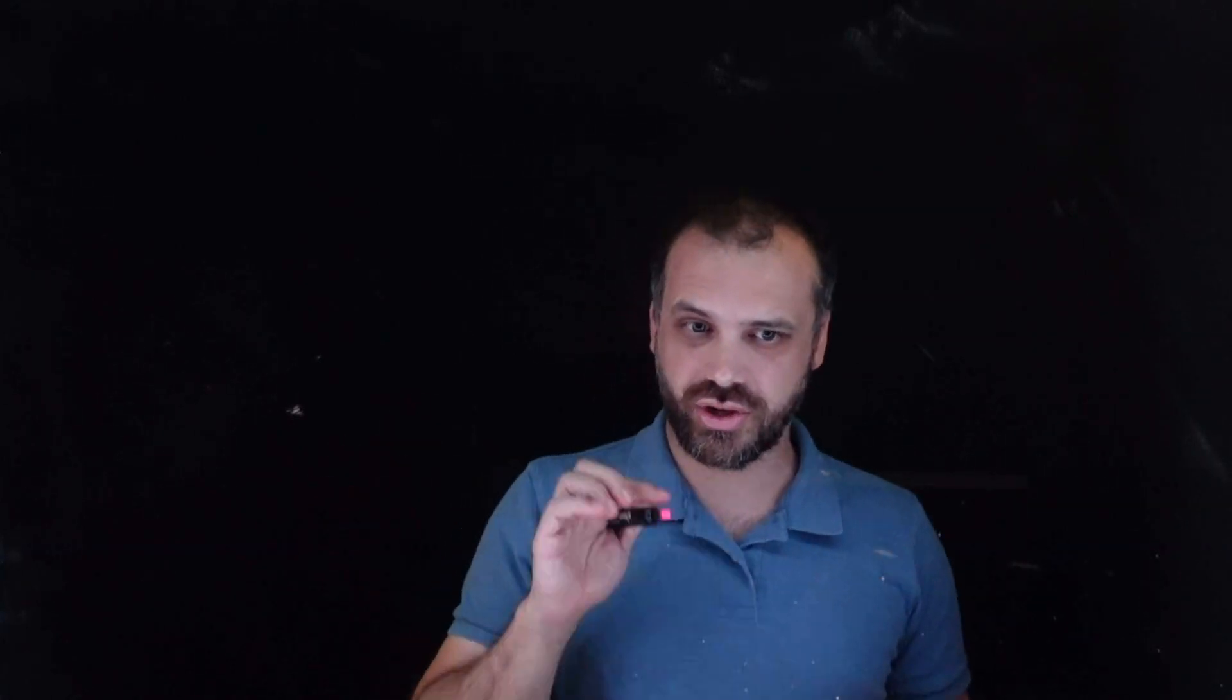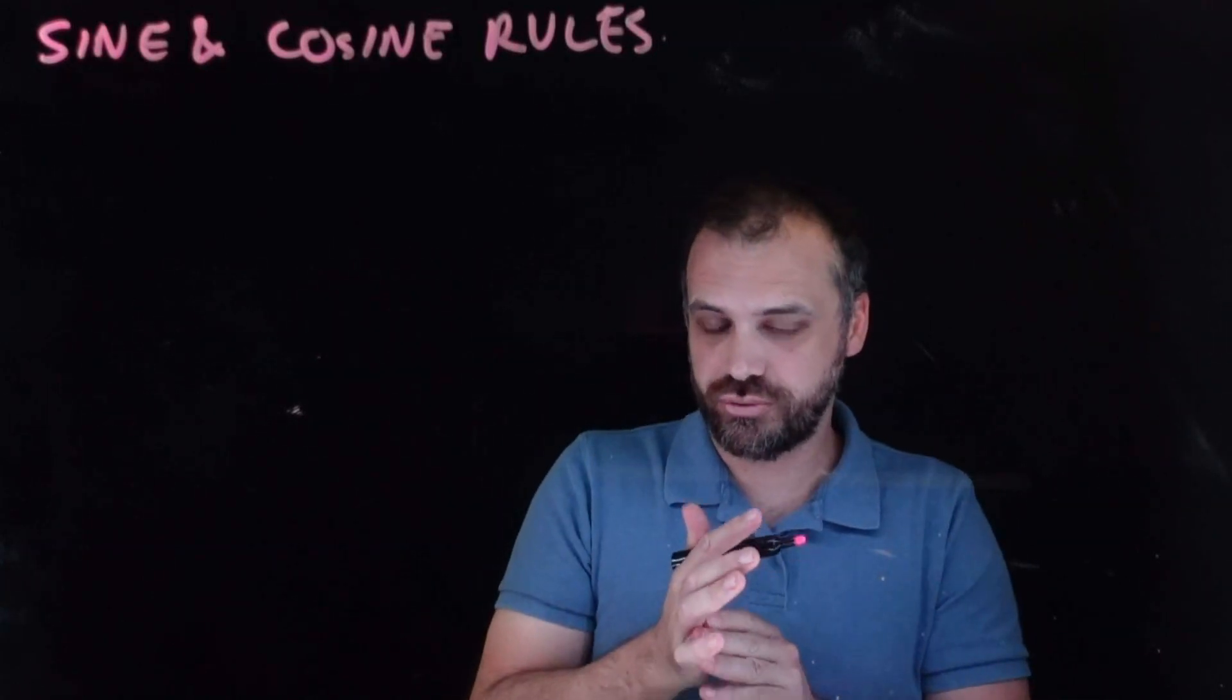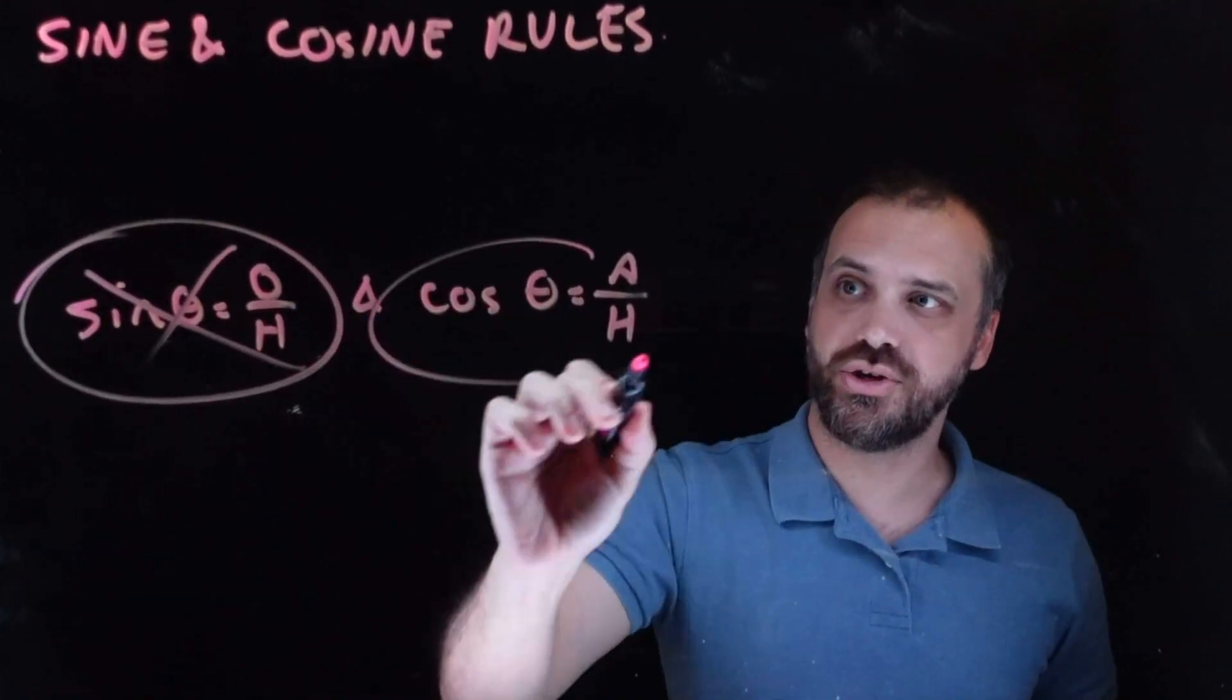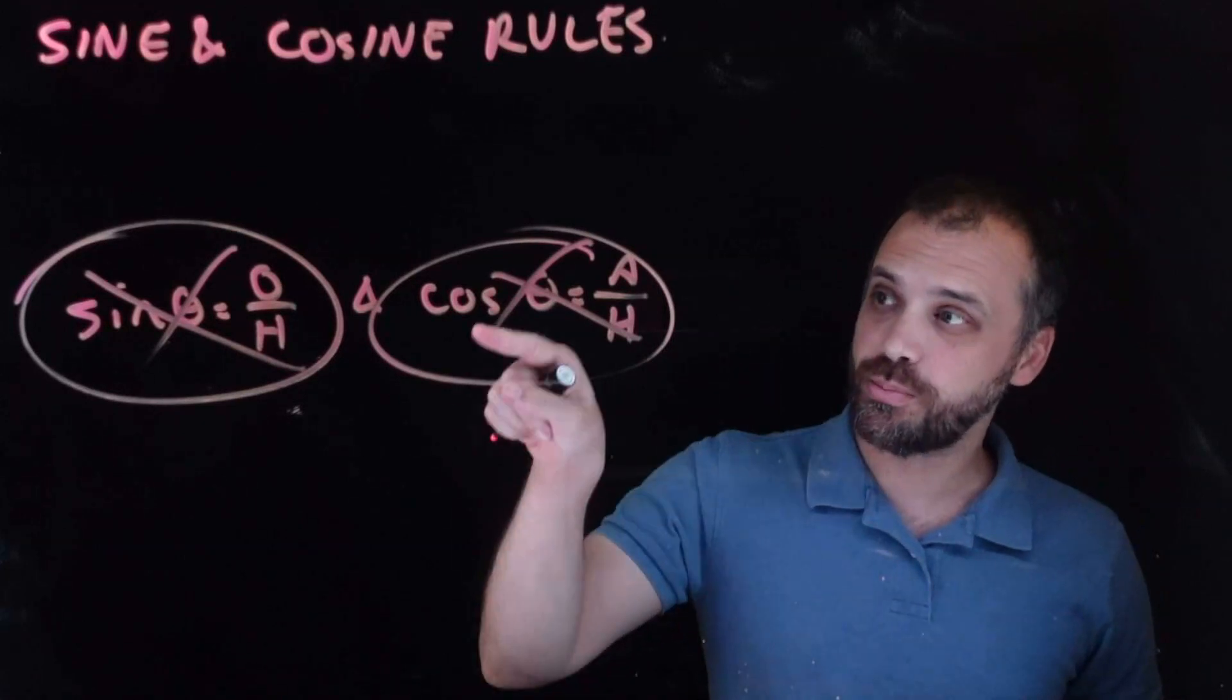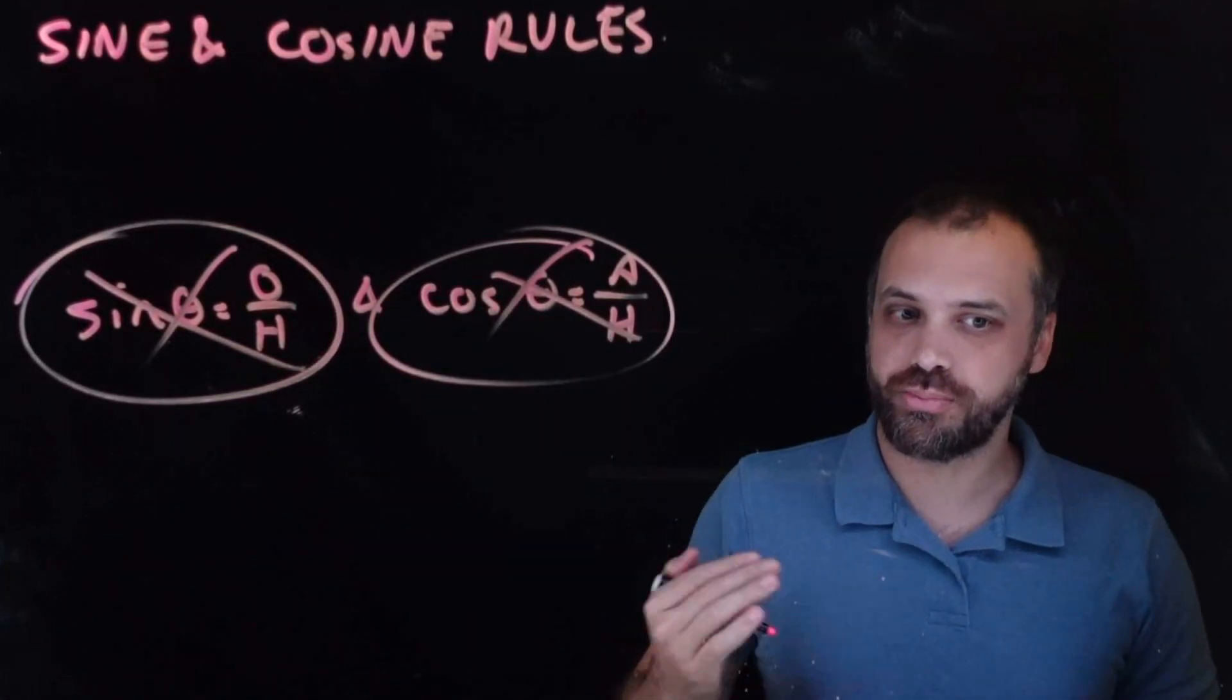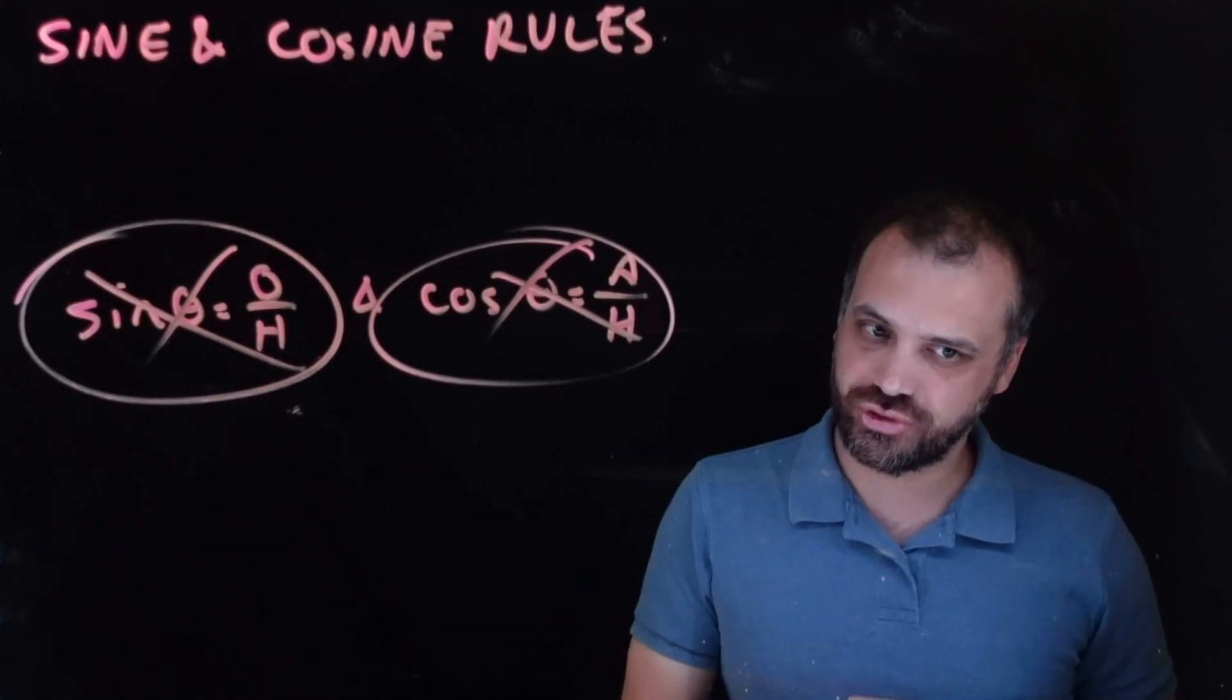So this is the first in a series of lessons on the sine and cosine rules. Now, I don't want you getting confused here. The sine and cosine rules are not this and this. The sine and the cosine rule are way more powerful than these. Why do I say they're way more powerful? These rules only work when you've got a right angle triangle.